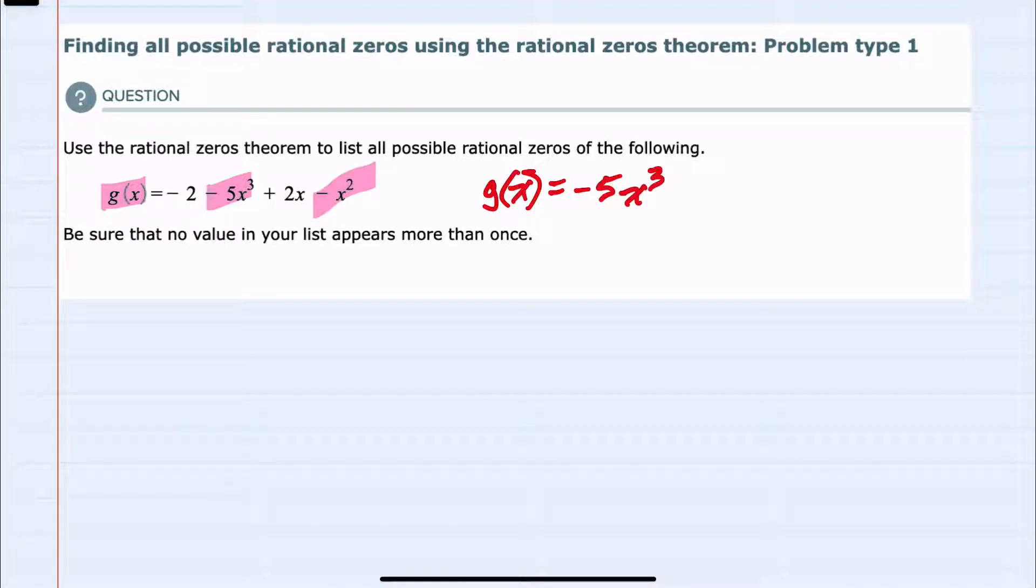Then we have -x², then +2x, and lastly our constant term, -2.